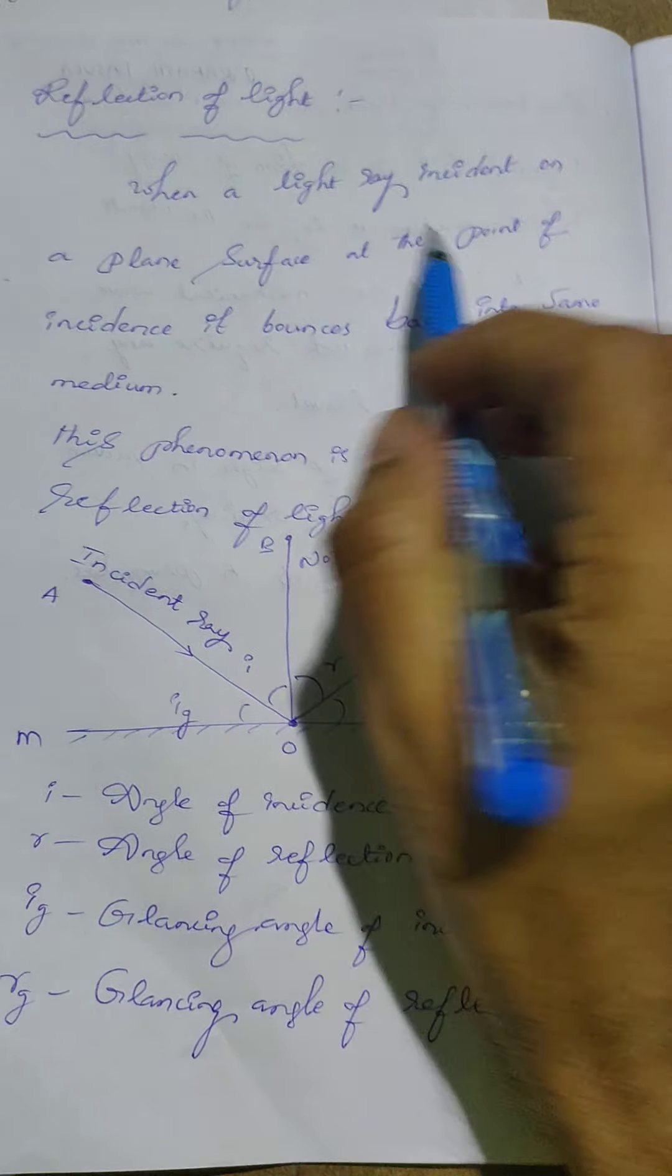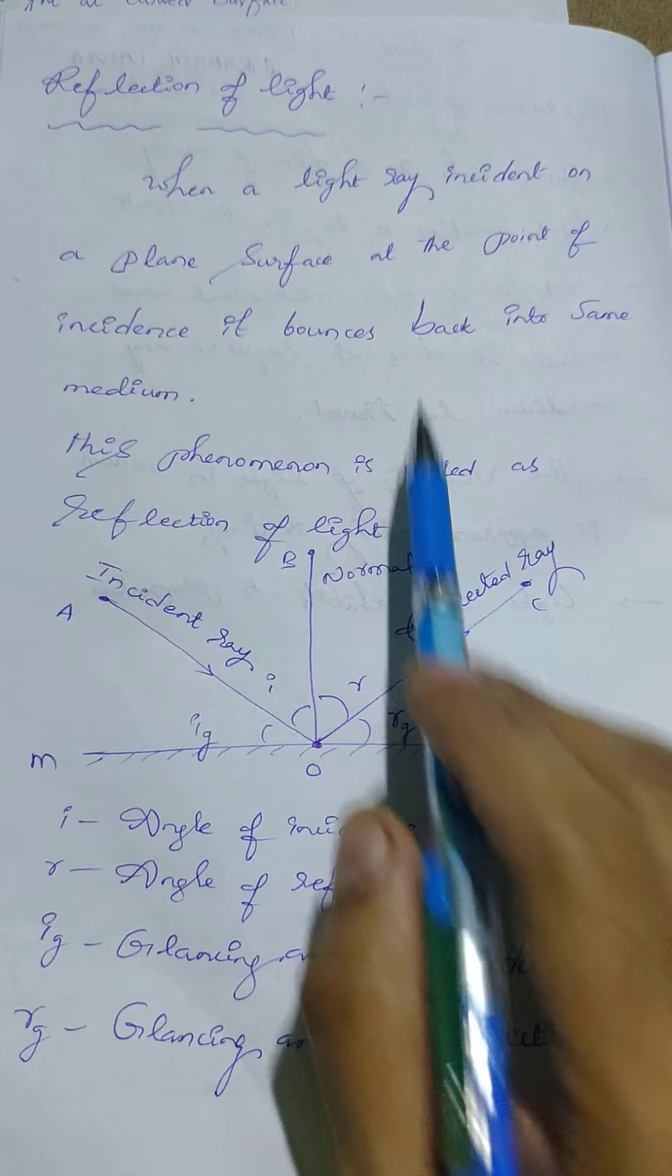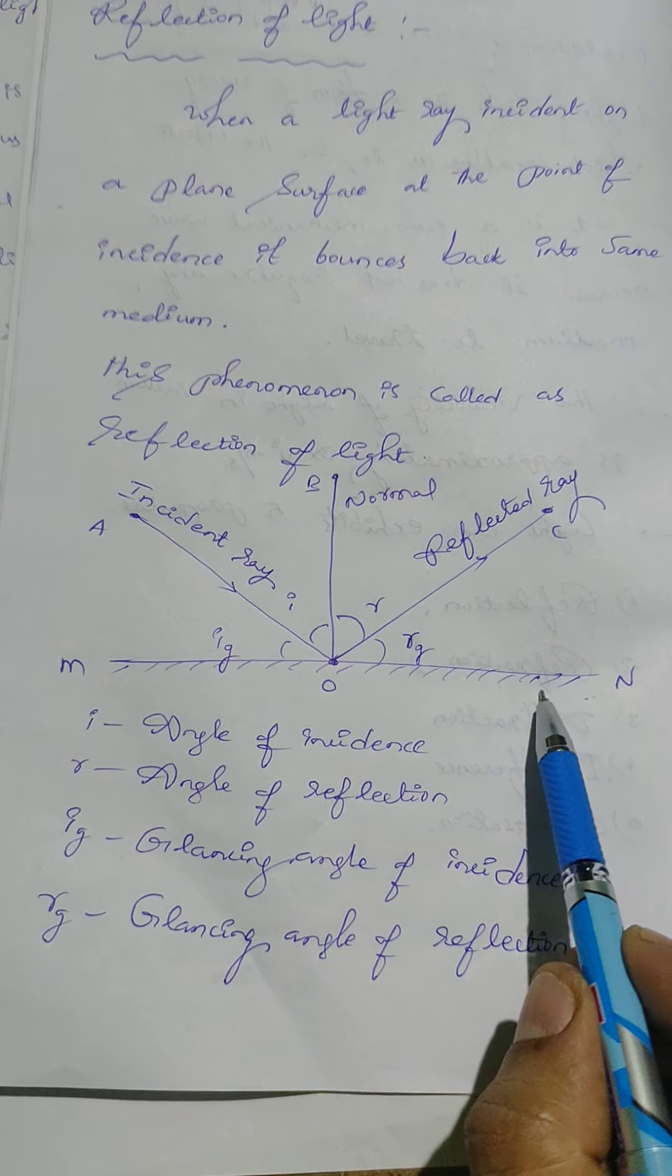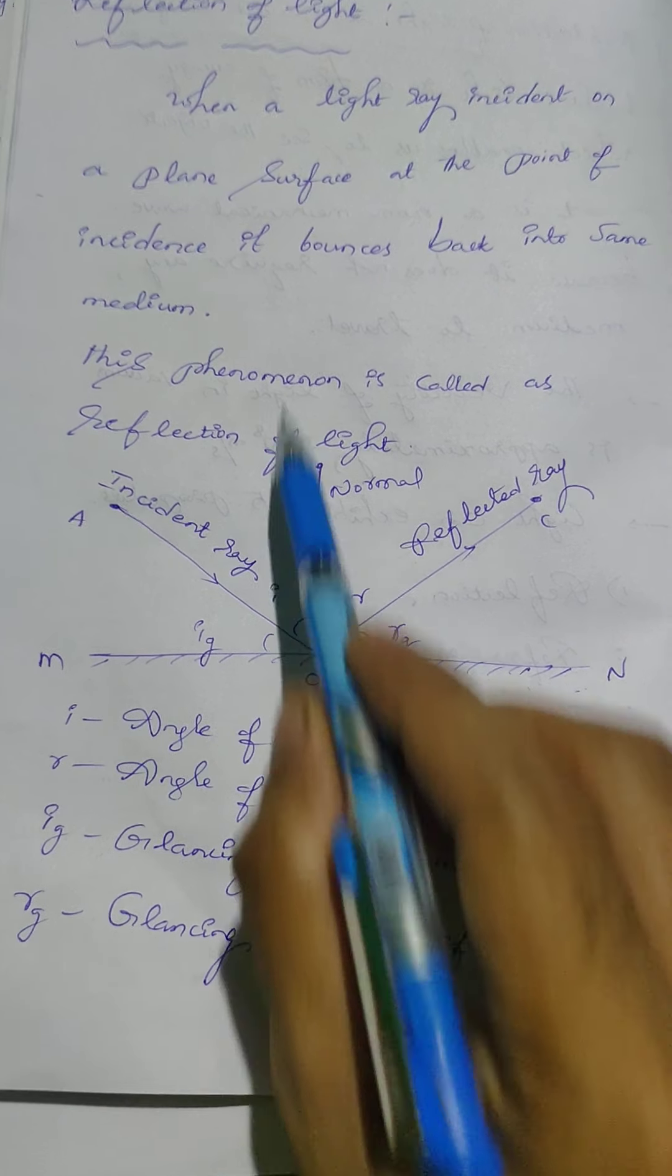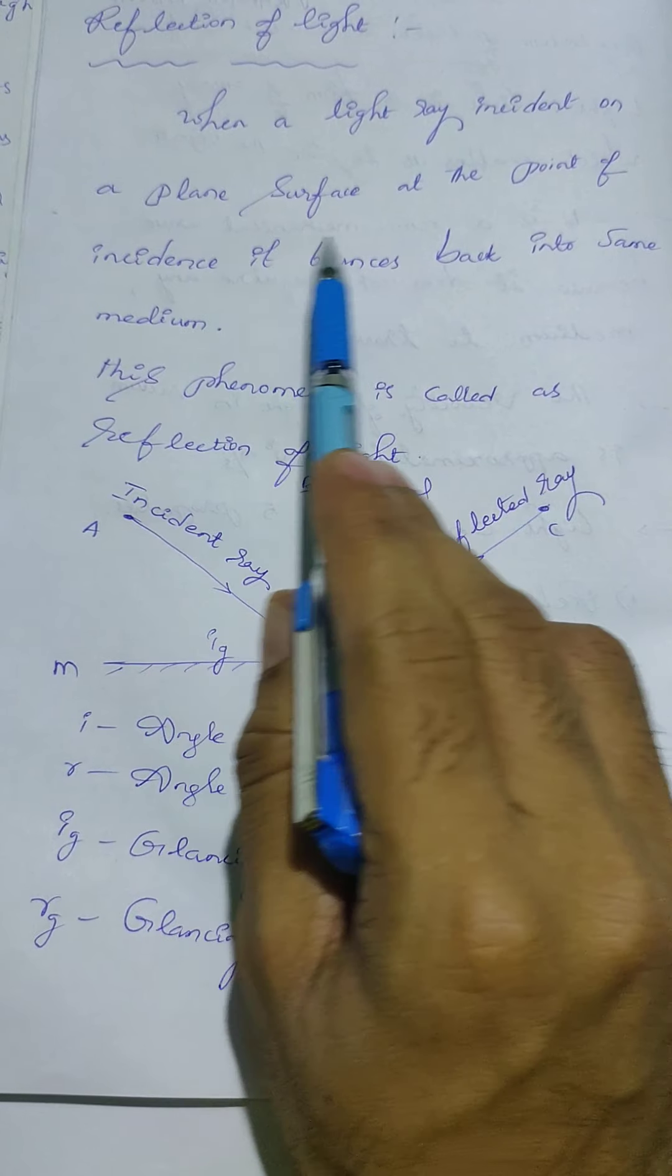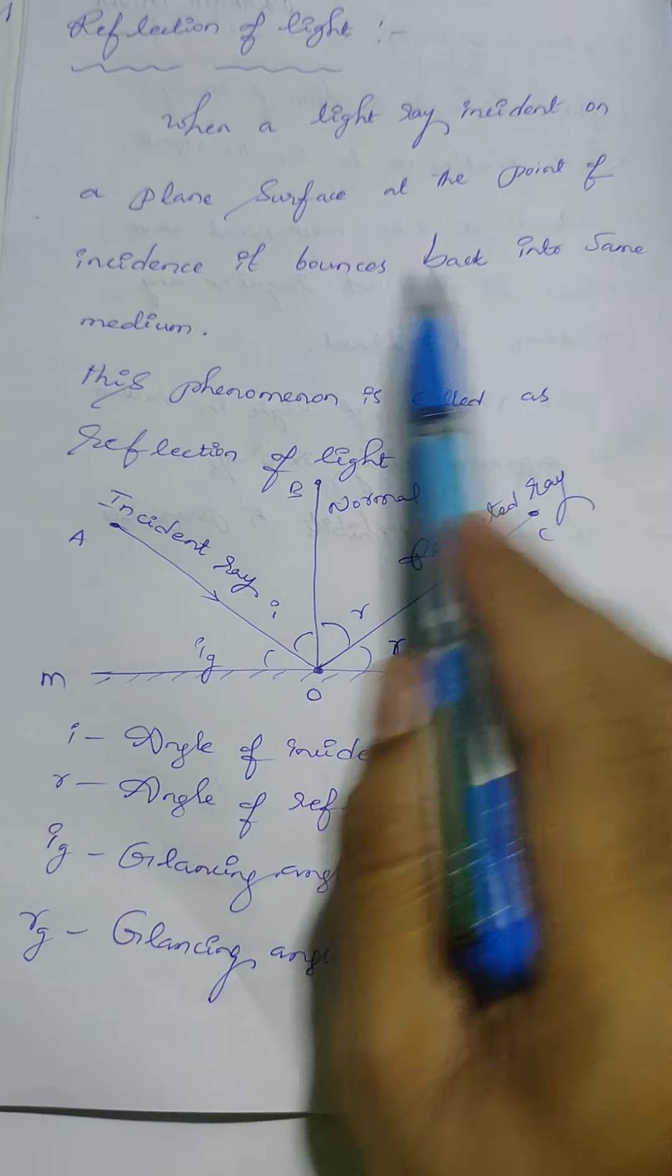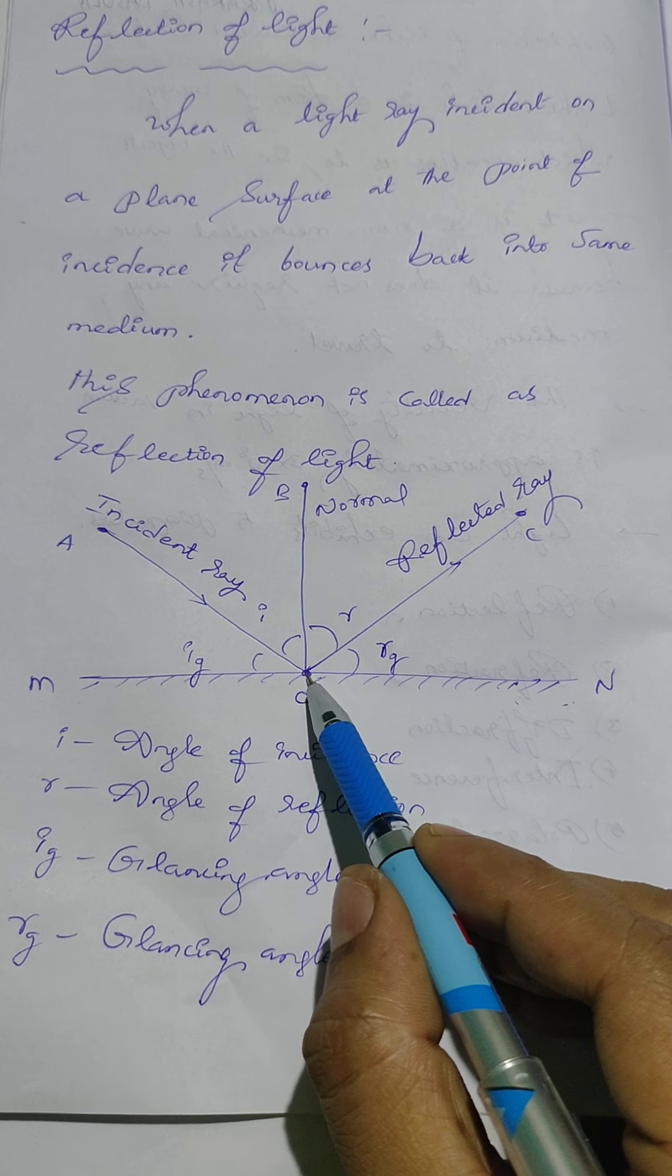What is meant by reflection of light? When a light ray incident on a plane surface, see children here, this is the diagram. So MN is the plane surface, here AO is the incident ray. When a light ray incident on plane surface at the point of incident, it bounces back into same medium.